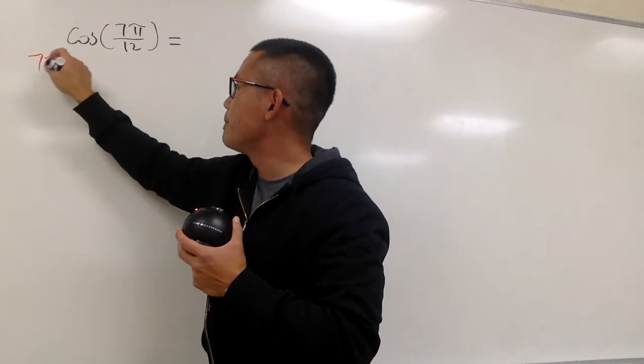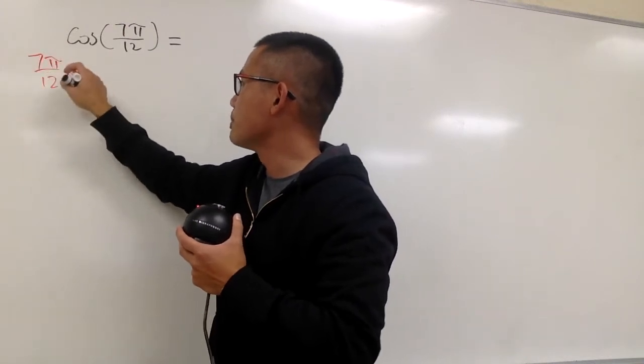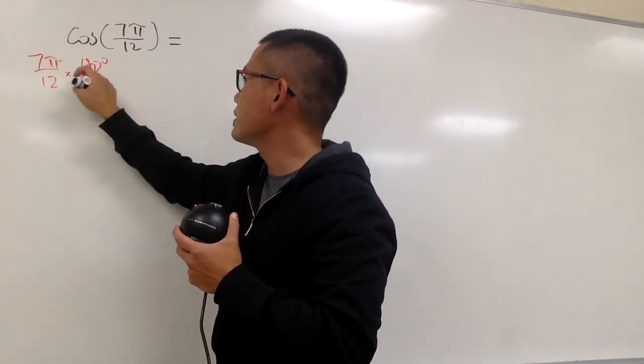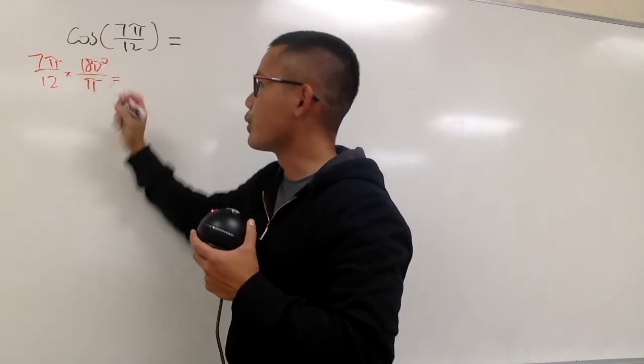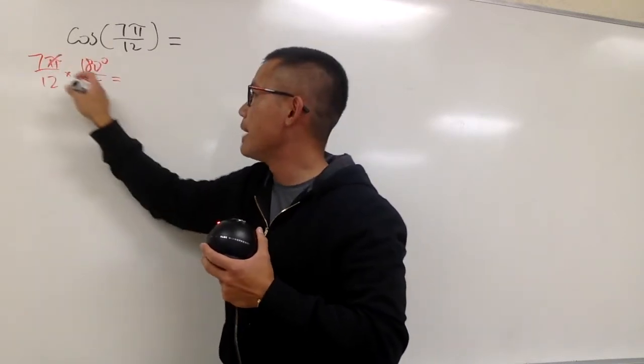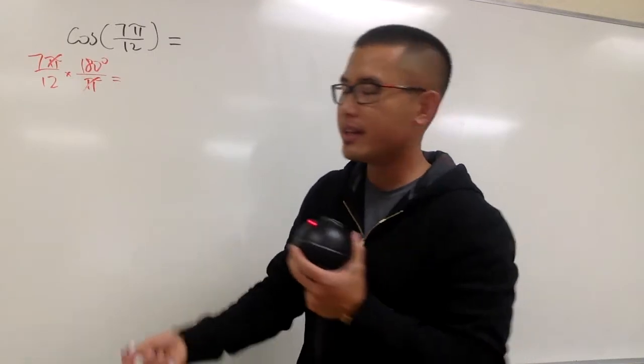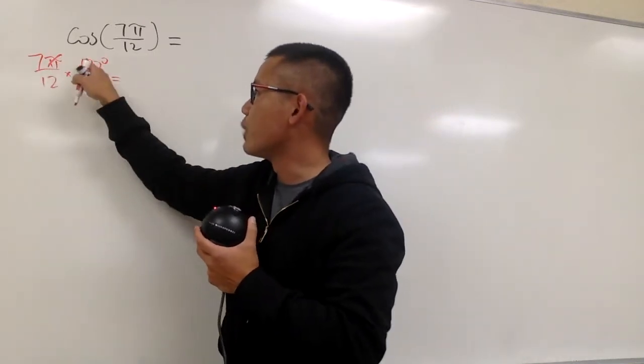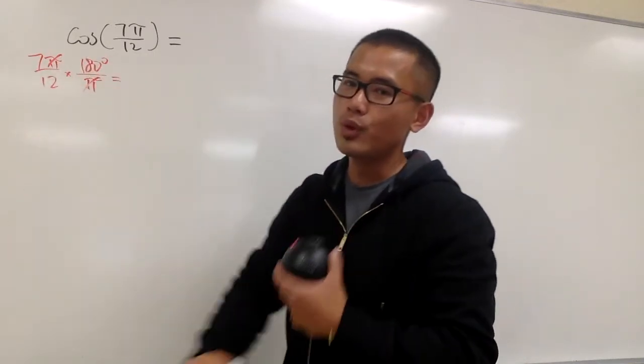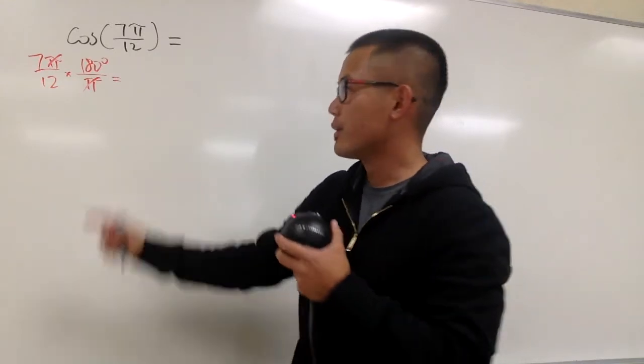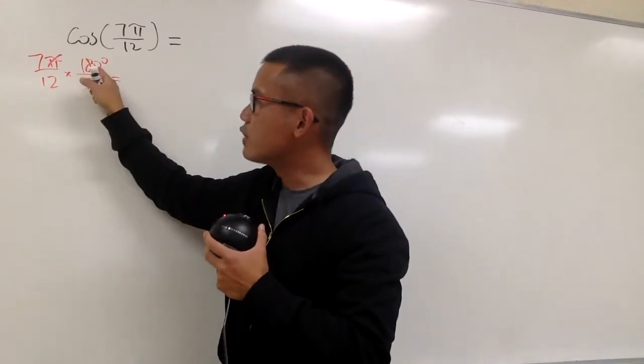So let's put down 7π over 12, and we multiply this by 180 degrees over π. Let's do this real quick. First of all, π and π cancel, and you can use a calculator and say 7 times 180, and then divide it by 12. Whichever way you want, right? You can also do this by hand, then cross-cancel first and multiply.